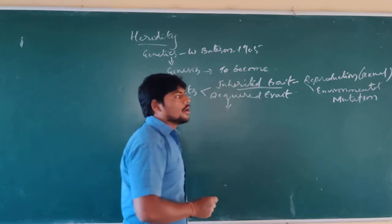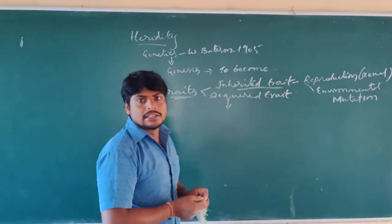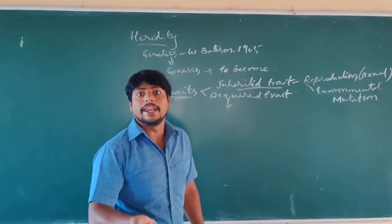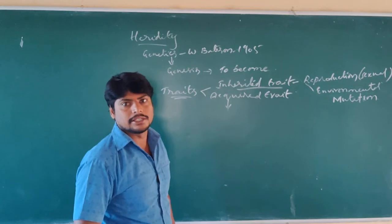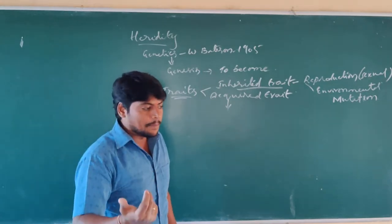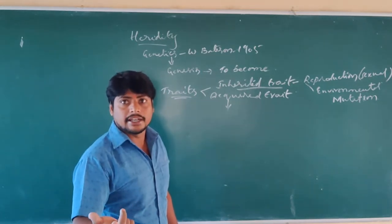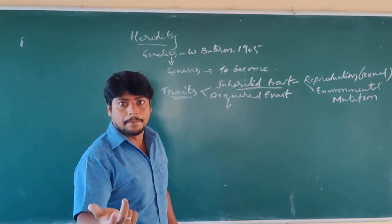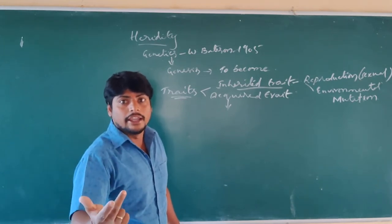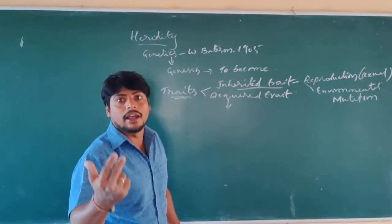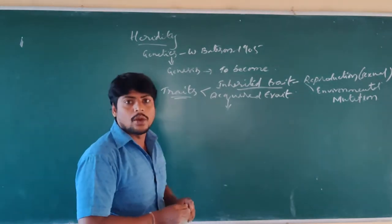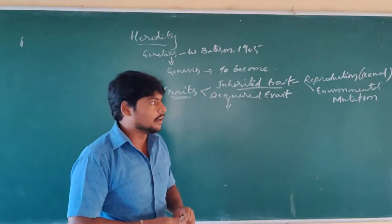The second type of trait is acquired traits. Acquired traits are those which we obtain during our life process — that is, characteristics or traits that we acquire in the middle of our life. That is called an acquired trait.